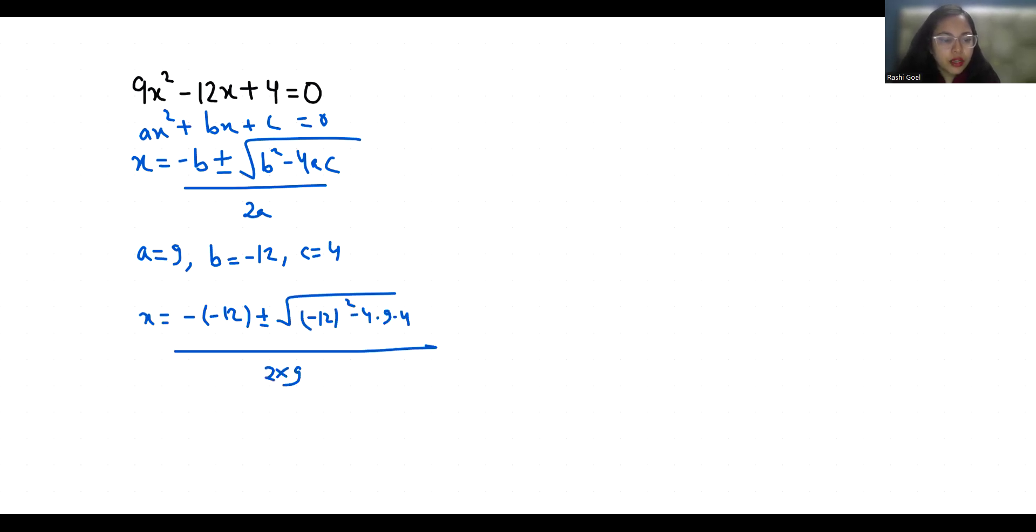So 12 ± √(144 - 144) / 18, which equals 12 ± √0 / 18.